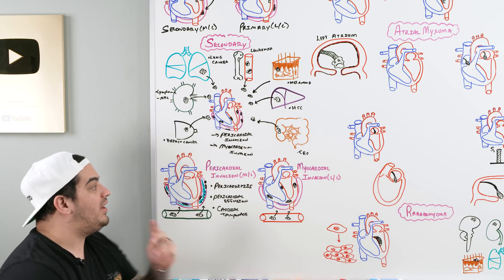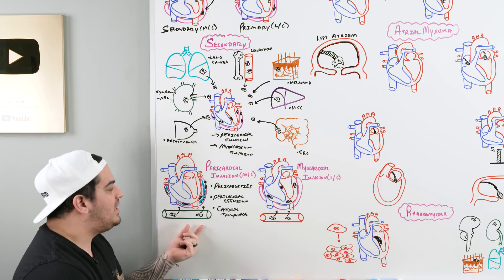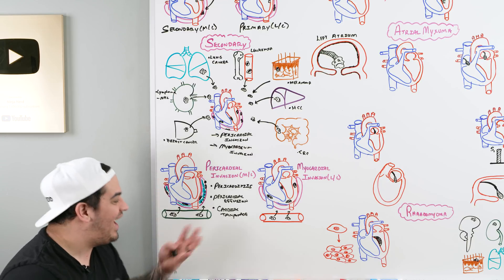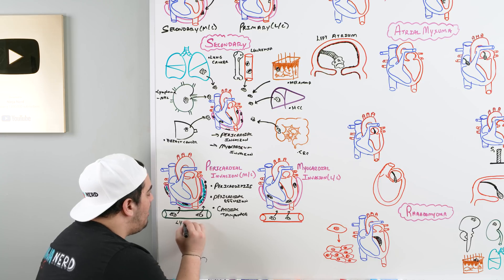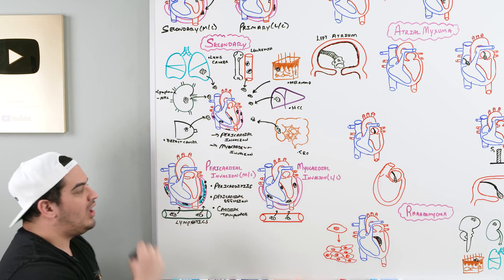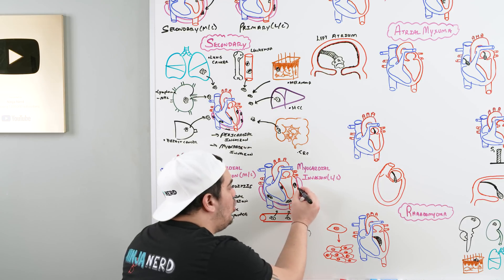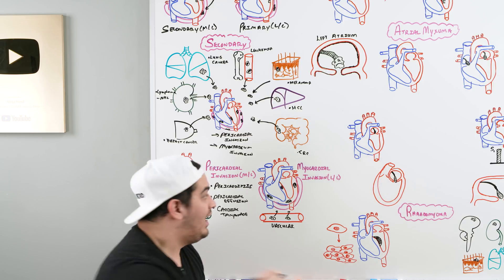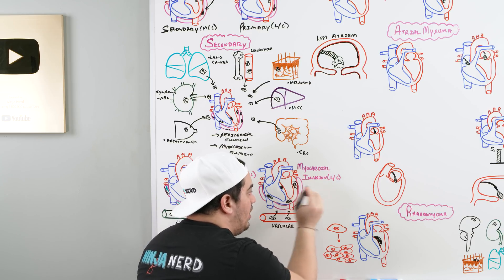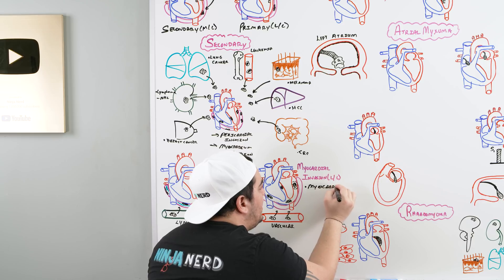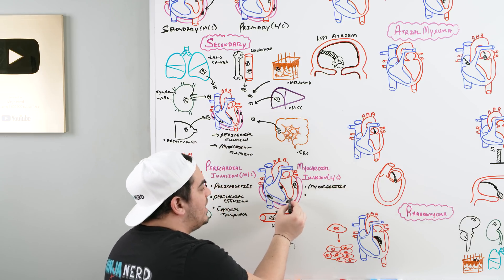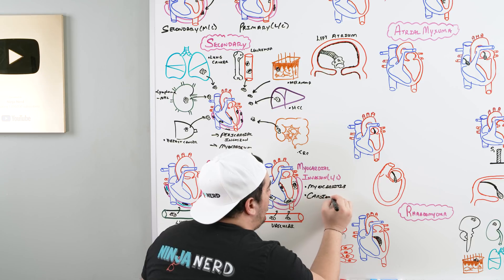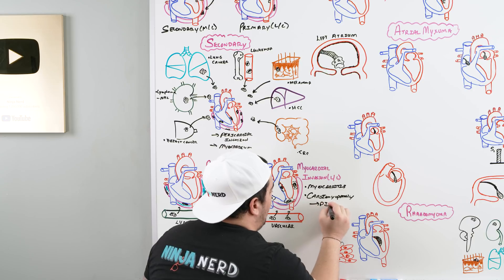Spread to the pericardium more commonly involves the lymphatic system. In contrast, myocardial invasion tends to occur when these tumors spread via the blood — the vascular system — depositing into the myocardial tissue, causing myocarditis. Over time, worsening myocarditis leads to dysfunction of the myocardium, which can lead to cardiomyopathy — specifically dilated cardiomyopathy as the more common type.